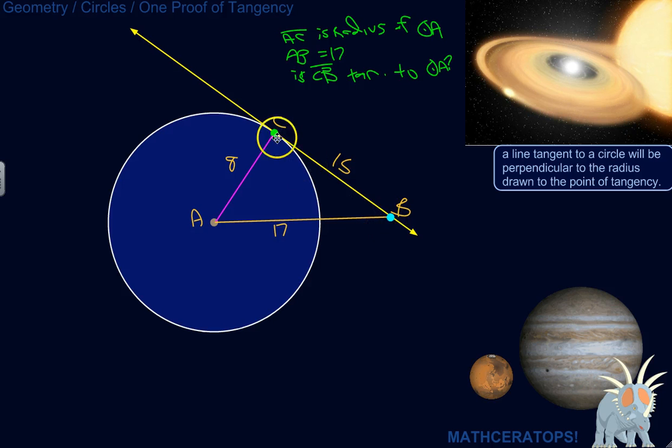I've got this line segment BC that's part of this line here. Is that a tangent line? So a tangent line will touch a circle at just one point, and a tangent line will also be perpendicular to the radius drawn to the point of tangency.